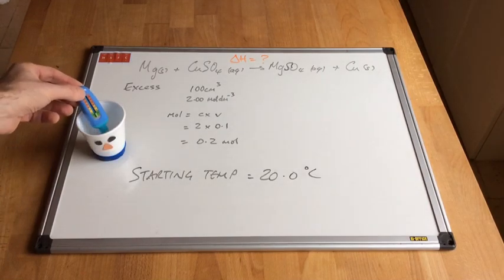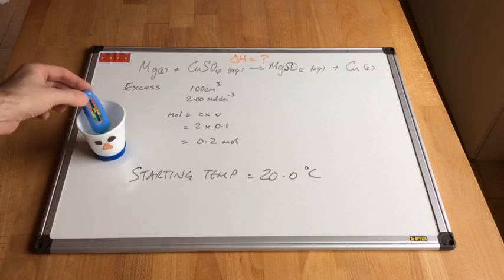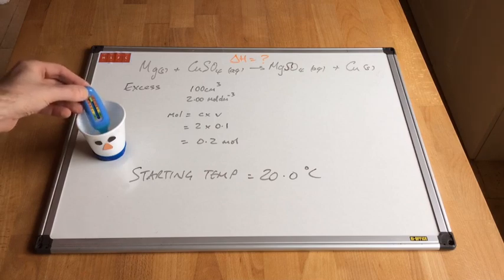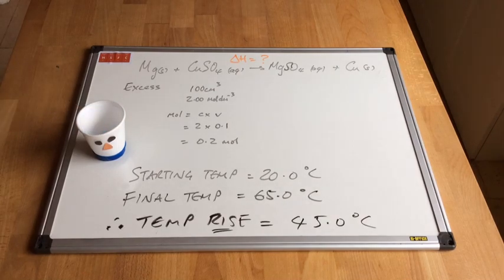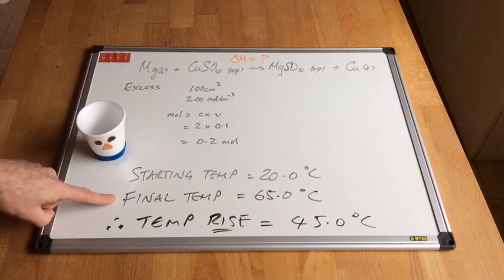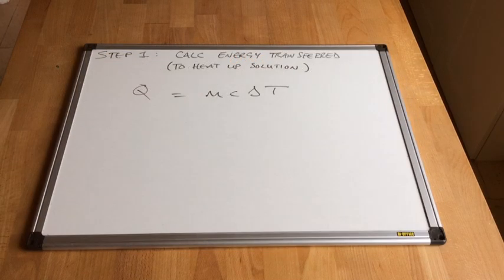I've added the magnesium — remember this is in excess — and the temperature is starting to go up. You can see the thermometer there is slowly starting to rise, and what I'm after is the maximum temperature rise produced by this reaction. The thermometer has plateaued now and it's reading 65 degrees C. So we had a starting temperature of 20°C, a maximum temperature of 65°C, meaning the temperature has risen by 45 degrees Celsius.